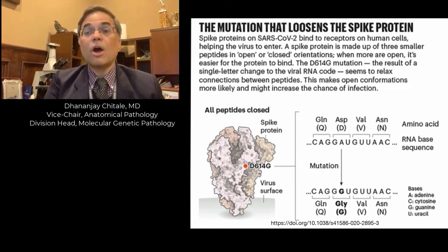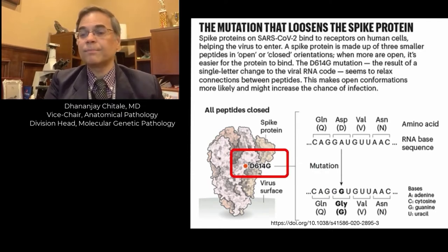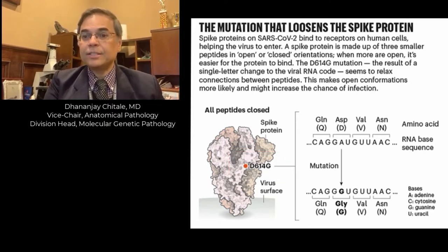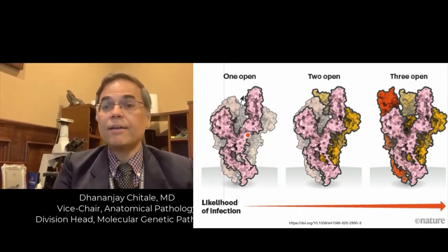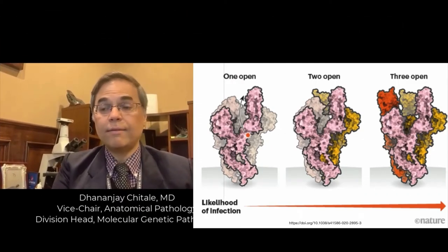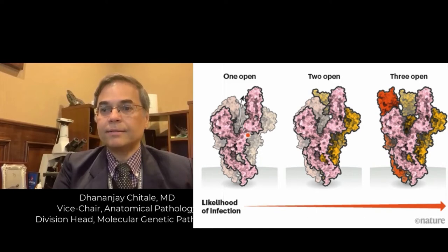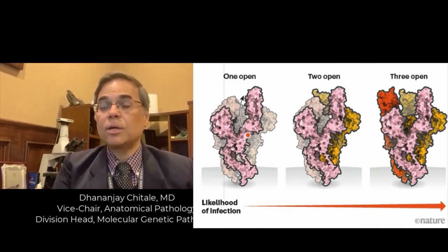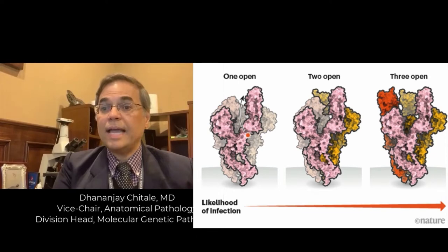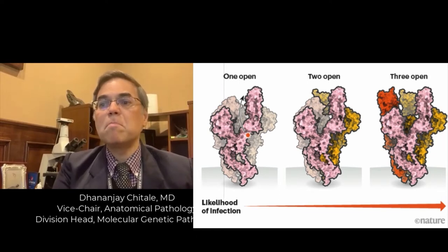We call this the D614G gene mutation. Compared to the original strain, people infected with this new strain have higher viral loads in their nose and throat, though they don't seem to get any sicker — they are kind of asymptomatic carriers. They are also much more contagious to others, and the new strain has a change to its spike protein that makes it much more efficient in its ability to bind human cells. Thank you so much for this information.